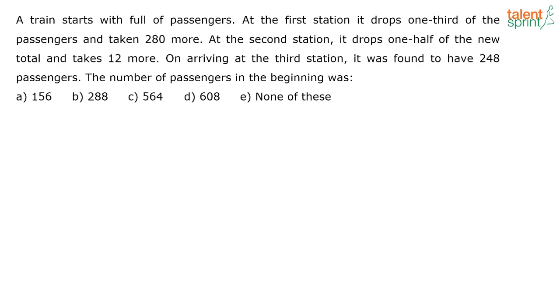So how do you solve this question? A train is full of passengers. Let us first assume that total there are x passengers. Now in this x passengers at the first station what is he doing? He is dropping one-third of the passengers. So he is dropping one-third means how many passengers are there remaining? He is dropping one by three x of them. So remaining will be nothing but one minus one by three of x, that is two by three of x. This is the remaining.